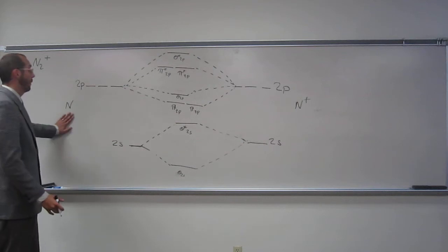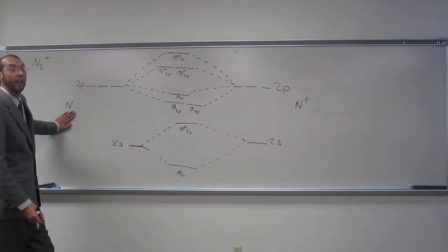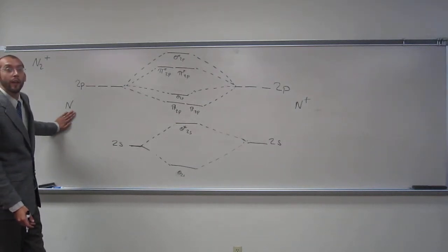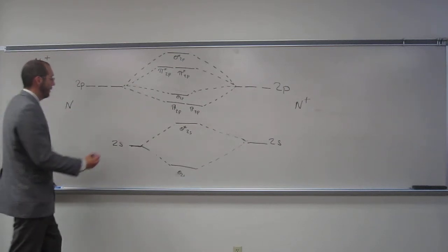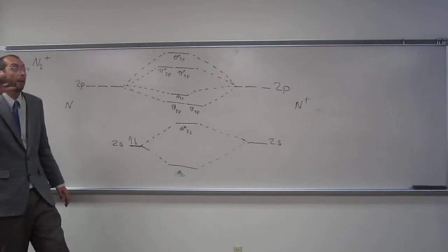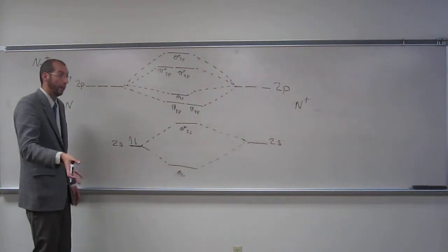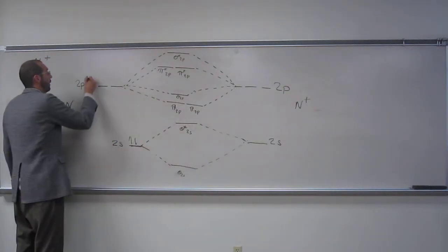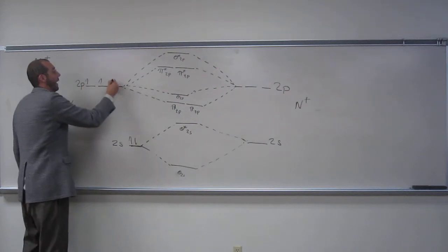So now let's fill in what we got here. How many valence electrons does nitrogen have in just N? Five, right? So one, two. Again, Aufbau, Hund's rule, Pauli exclusion, right? So one, two, three, four, five, like that.